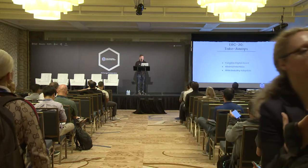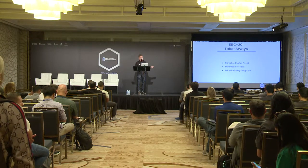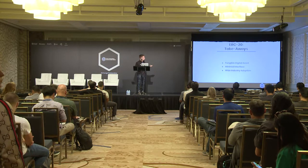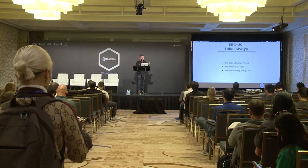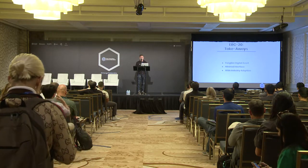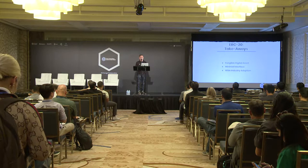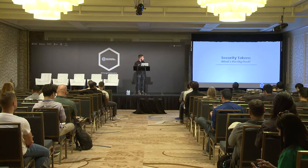ERC-20 recap: we have the ability to represent a fungible digital asset on the Ethereum blockchain, a minimal interface that's relatively simple to implement with only six functions and two events, and a standard that's already widely adopted by issuers, wallets, and exchanges. So let's get into security tokens.